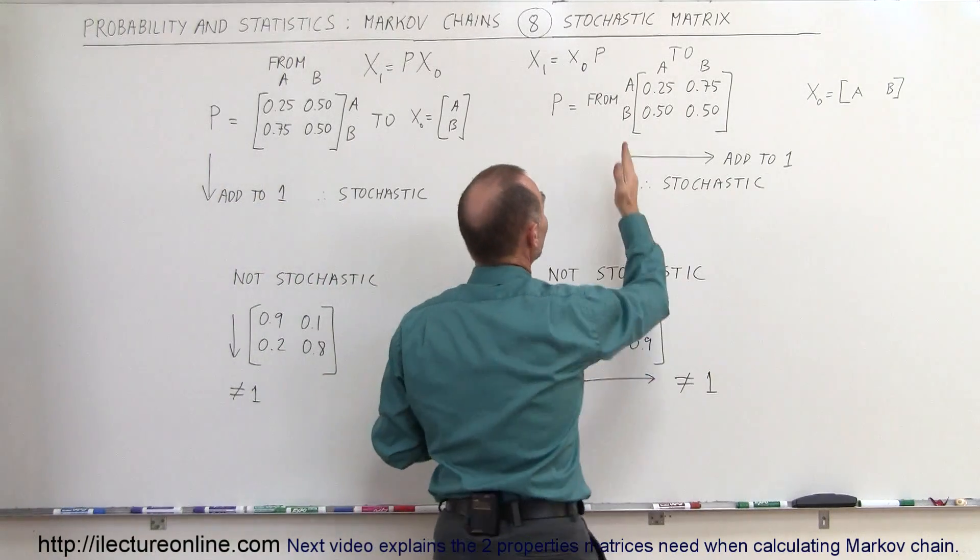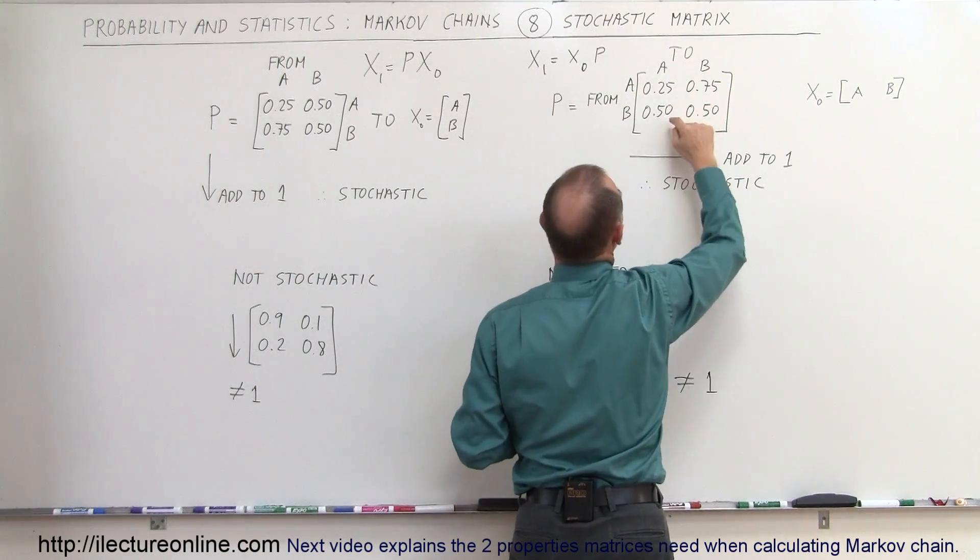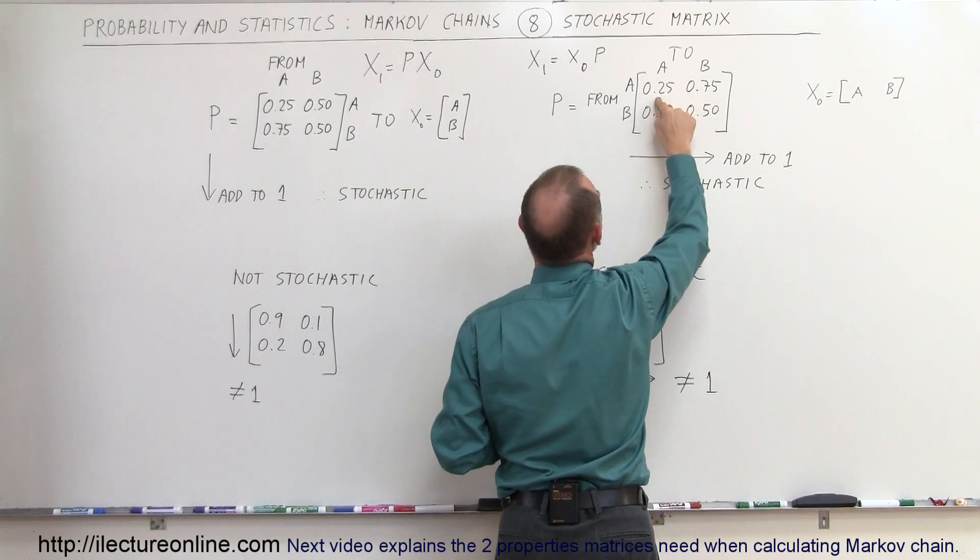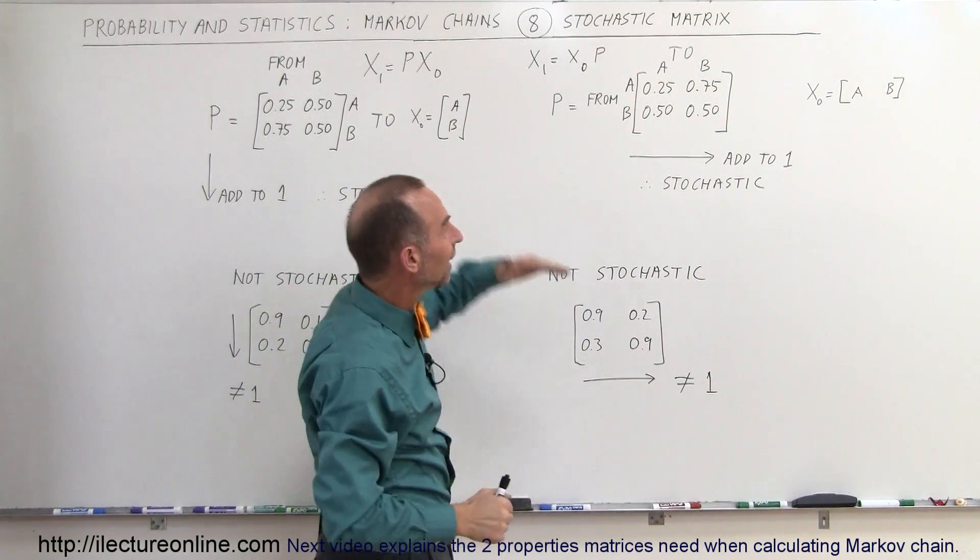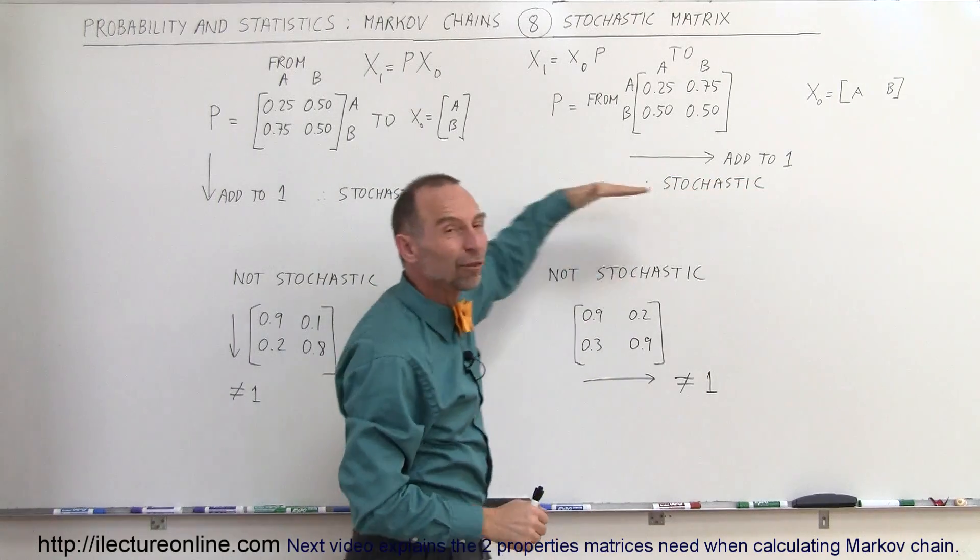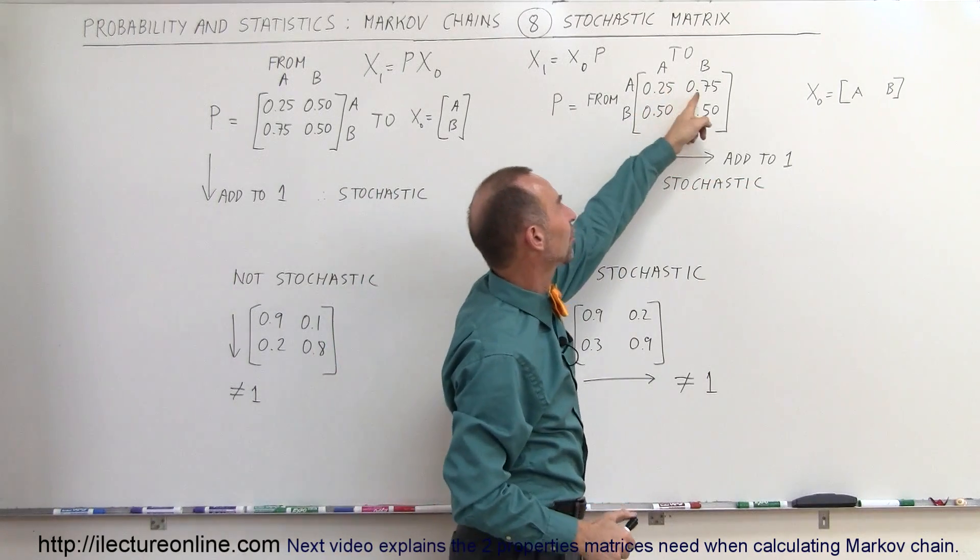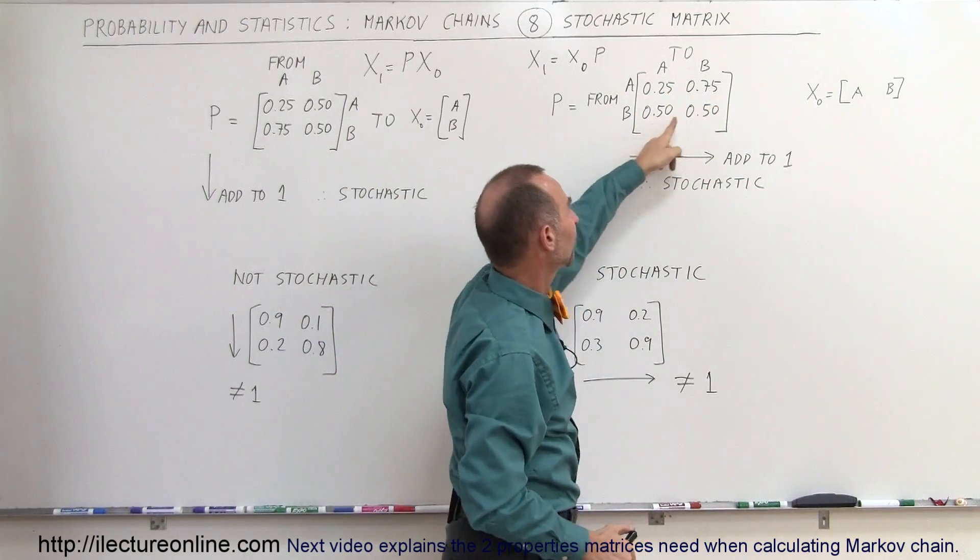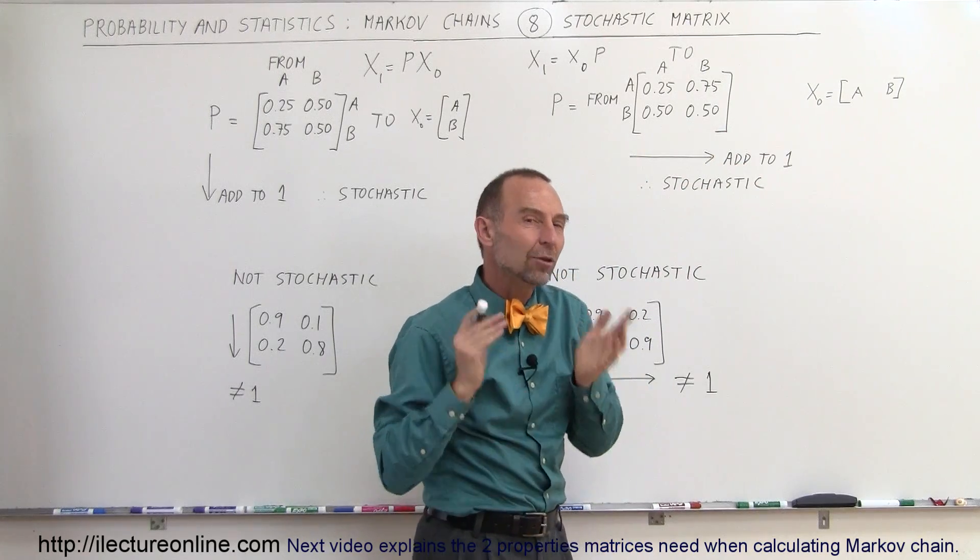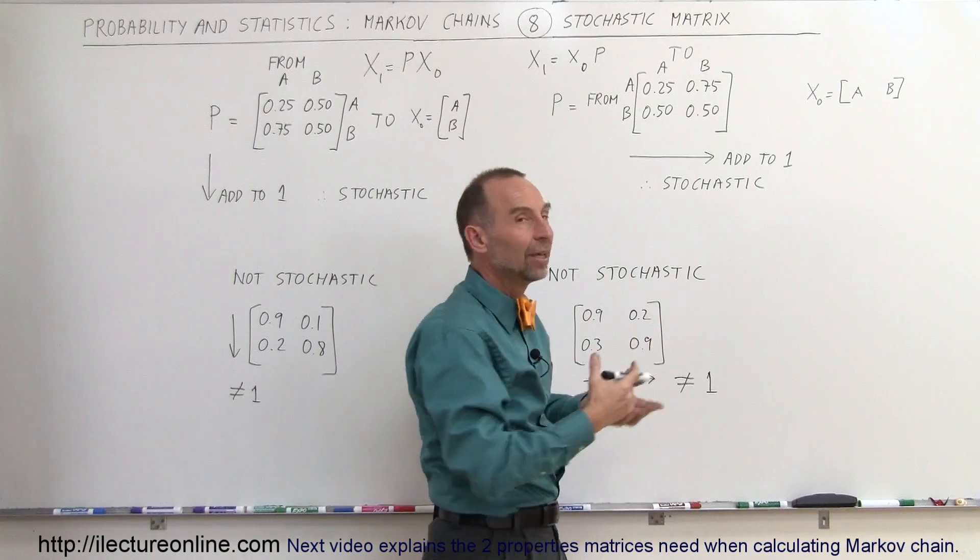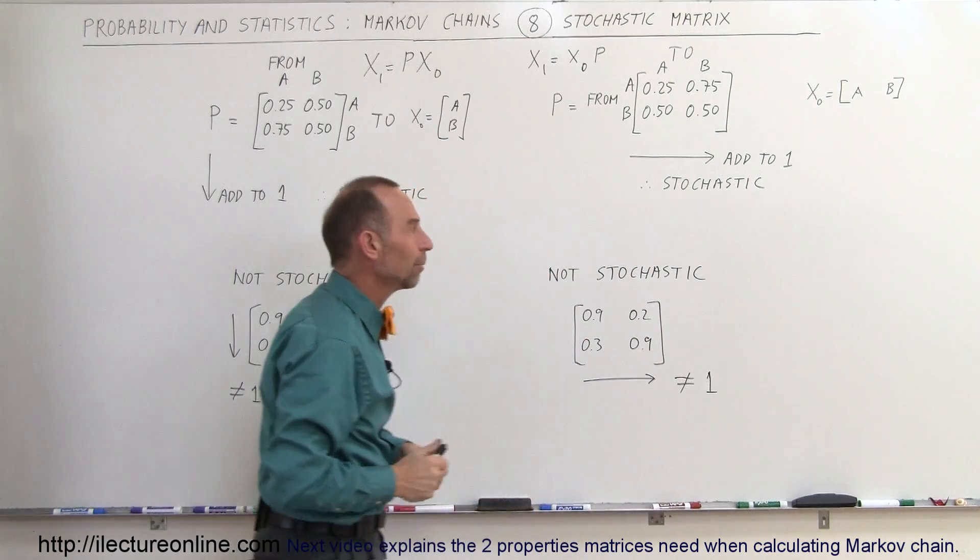Here if you do it like this we have from on the left and to on the right so we go from A to A is 0.25, from A to B is 0.75. If we do it like this then the elements need to add up to 1 when we go from left to right. So notice 0.25 plus 0.75 is 1, 0.5 plus 0.5 is 1. So therefore this matrix is stochastic and we can use that matrix in solving what we call Markov chains type of problems.